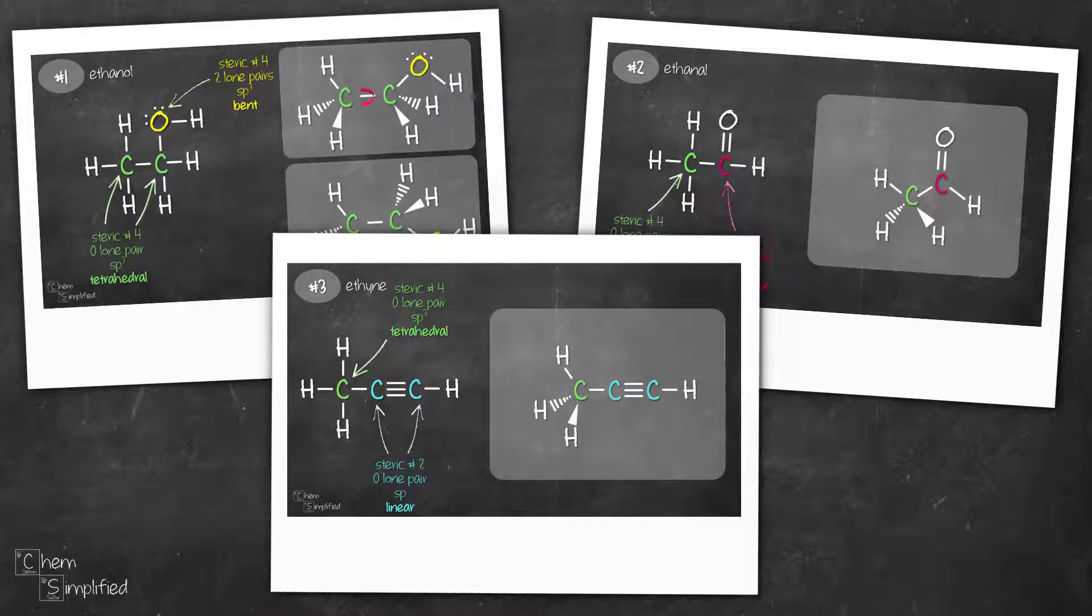When learning organic chemistry, you will need to show the stereochemistry of chiral centers. Therefore, being able to draw the tetrahedral structures correctly is crucial. Also, you'll need to show the geometry of your substrates when drawing mechanisms. Therefore, the ability to draw organic compounds in 3D is an extremely important skill.